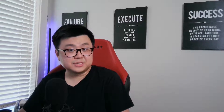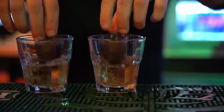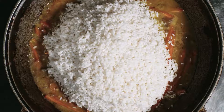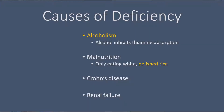The most common cause of thiamine deficiency by far is alcoholism, because alcohol inhibits thiamine absorption. Malnutrition is another cause, especially in third-world countries. Eating white rice instead of brown rice can also contribute, and to a lesser degree, Crohn's disease and renal failure requiring dialysis are additional causes.